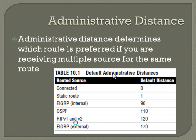You can learn routes from all these different sources. Administrative distance determines which route is preferred if you are receiving multiple sources for the same route. Anything directly connected to you has a default distance of zero. A static route, because you're assigning it for tight control of routing, has a default distance of one. Then you can see the various routing protocols have different distances — lower values are better. So if you're learning something via RIP version 1 or 2, and also via OSPF, it's always going to prefer the OSPF route over the RIP route.